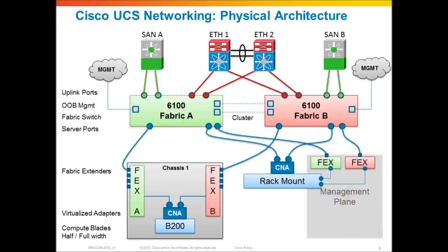One of the new capabilities with UCS, with version 1.4 of UCS Manager, is the ability to take a Cisco rack mount server and connect it directly to the Fabric Interconnect, and manage your rack mount servers in exactly the same way that you manage your blade servers in the blade chassis. All of these rack mount servers would be managed through that management port — through the same UCS Manager interface on the Fabric Interconnect — really providing form factor independent stateless computing.